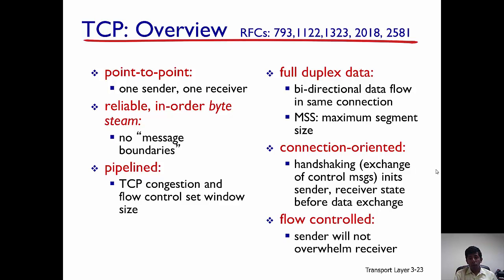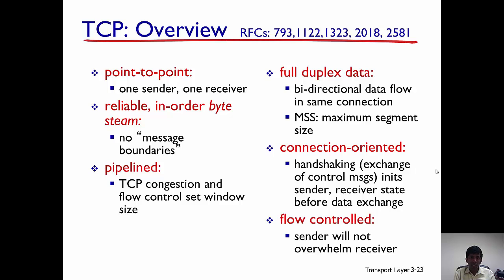TCP also has mechanisms for flow control, which makes sure that the sender does not overwhelm the receiver. When can a sender overwhelm the receiver? If the sender has a higher processing and transmission capacity than the receiver, the sender sends at a higher rate than the receiver can handle, causing the receiver to drop packets. TCP has a flow control mechanism built in so the sender does not overwhelm the receiver.